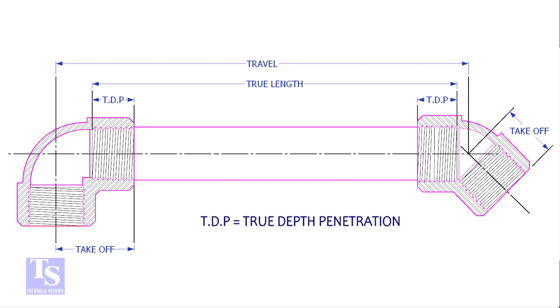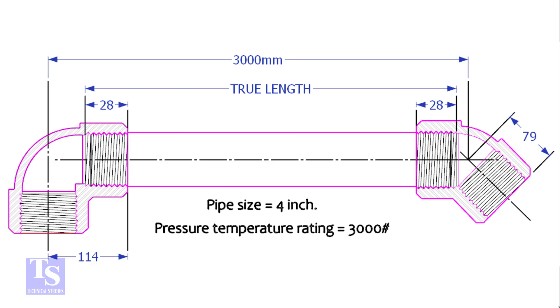Let us calculate the true length of a pipe with 90-degree and 45-degree elbows. The pipe size is 4-inch, pressure rating is 3,000 pounds, and the travel length is 3,000 millimeters.